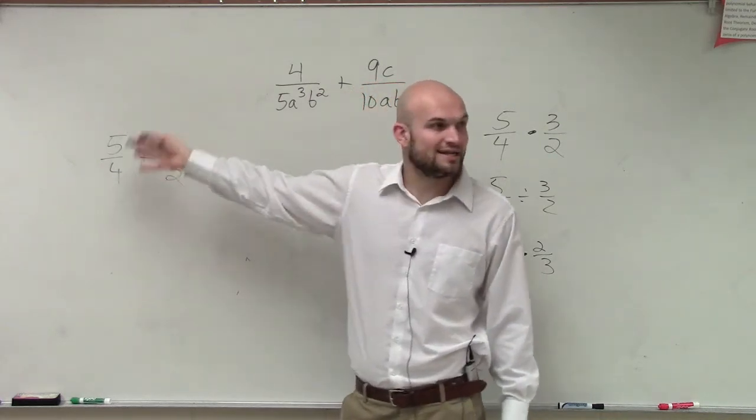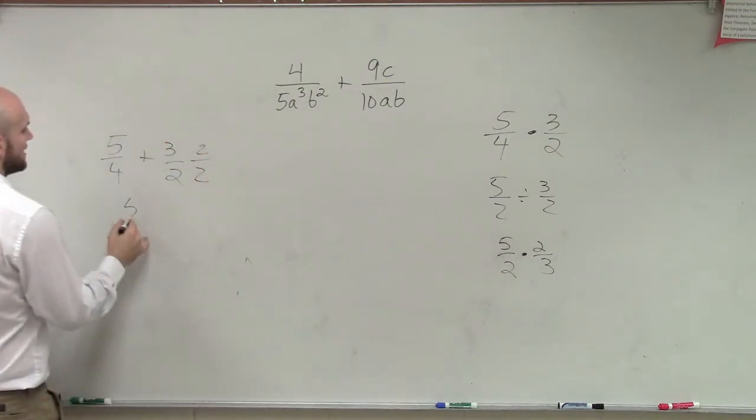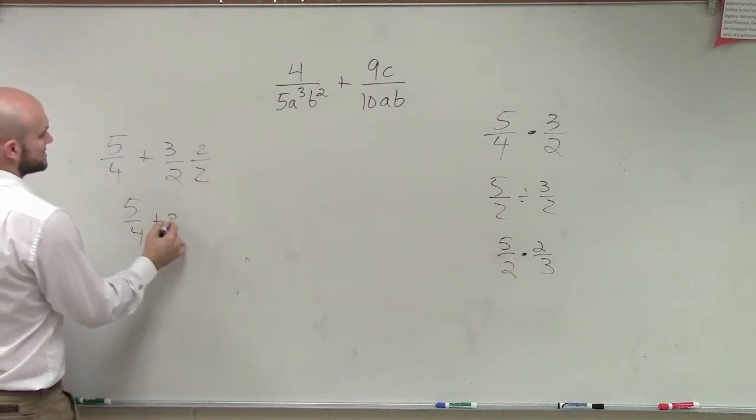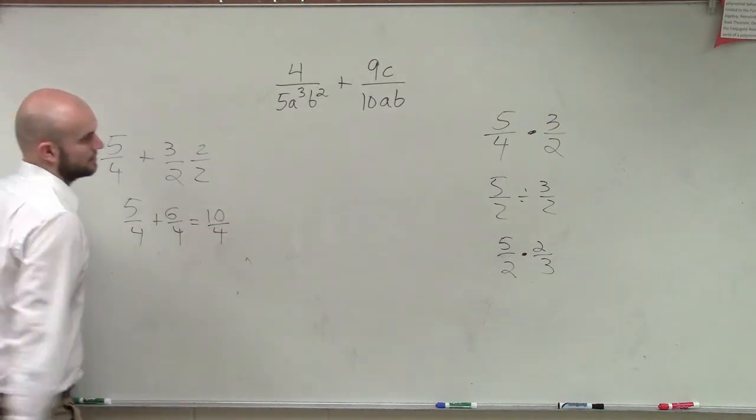So, therefore, I need these to get to be the same. So, what I need to do is multiply this by 2 over 2. Therefore, I have 5 over 4 plus 6 over 4, which equals 10 over 4. Okay?